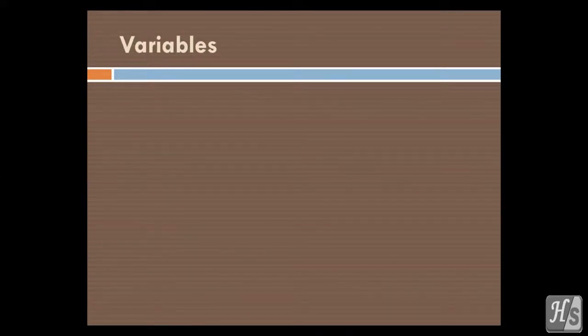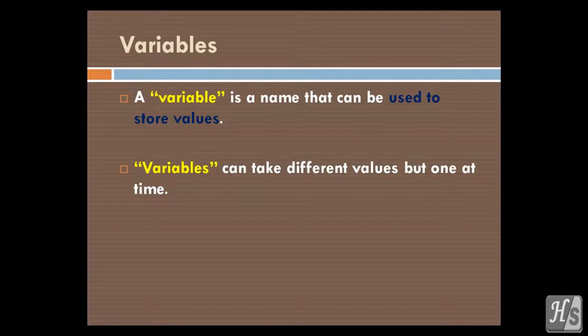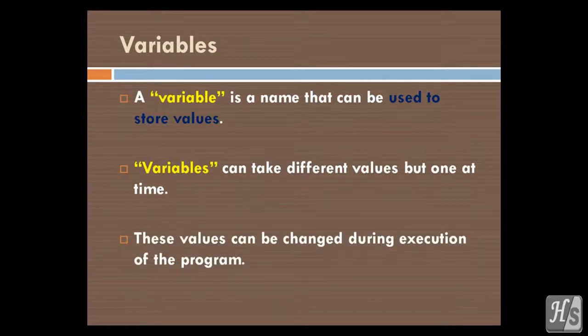Variables. A variable is a name that can be used to store values. Variables can take different values, but one at a time. These values can be changed during execution of the program.